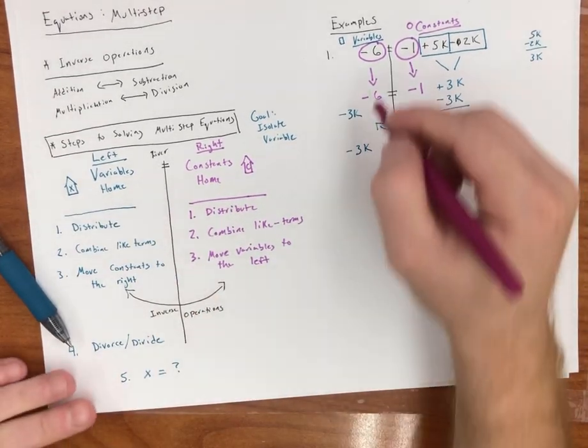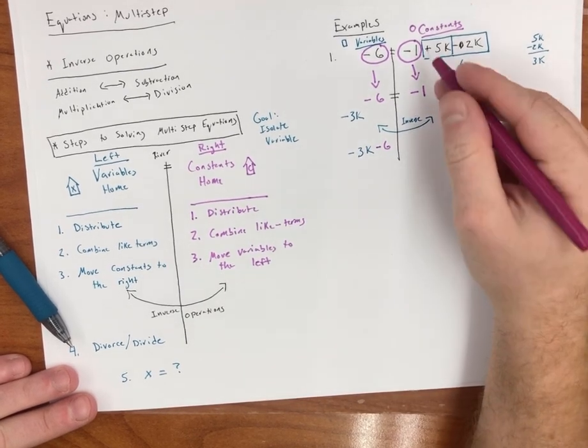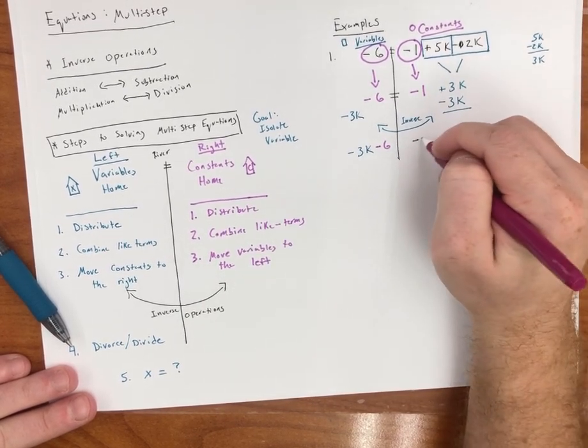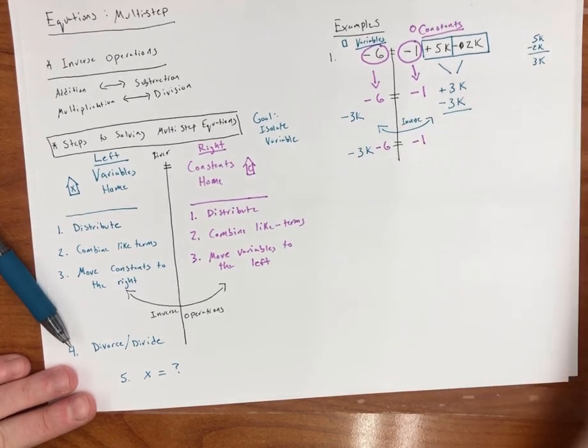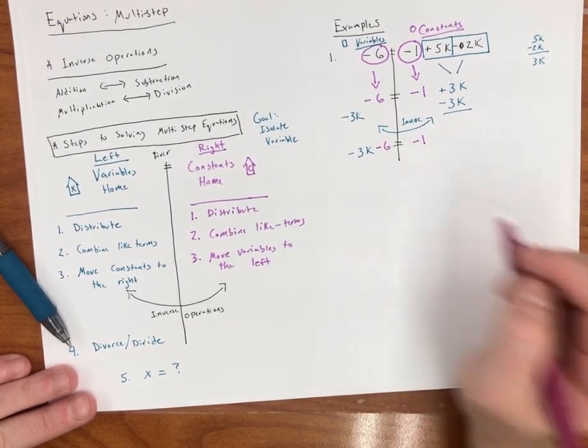And then now I'm just going to bring down the rest of the stuff. Did we have a constant? No, we didn't do anything with that constant. And then now we have this constant over here. Remember, these are still equal. So we have negative 3k minus 6 is equal to negative 1.